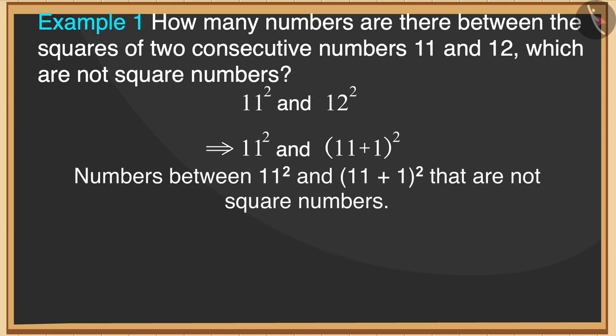Thus, there are 22 numbers between the squares of 11 and 12 which are not square numbers.